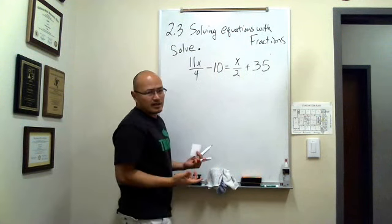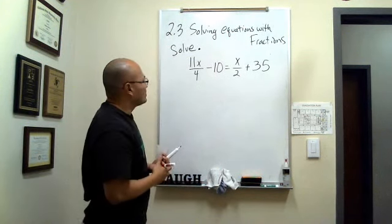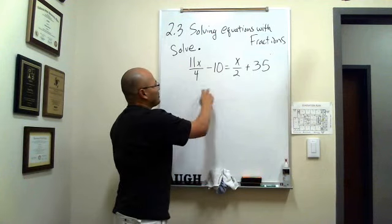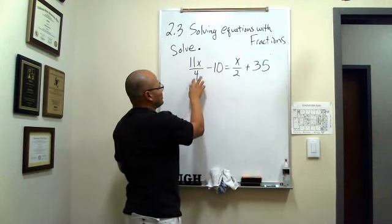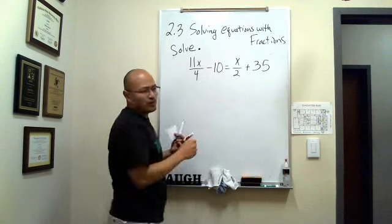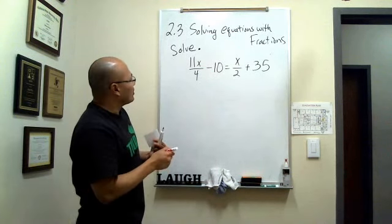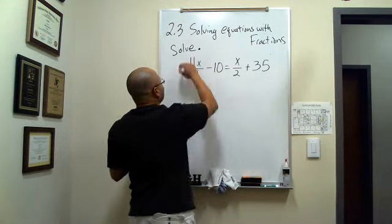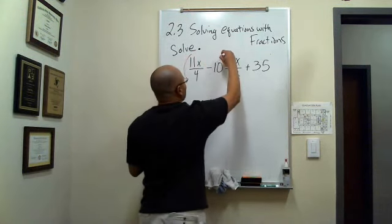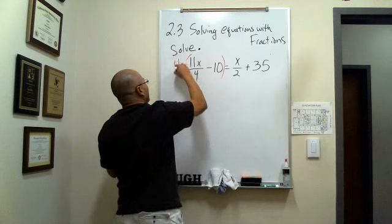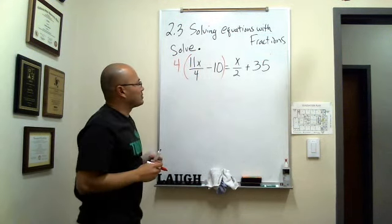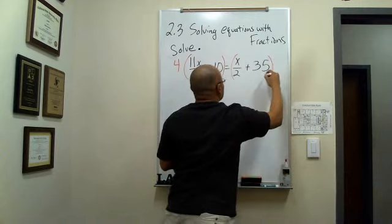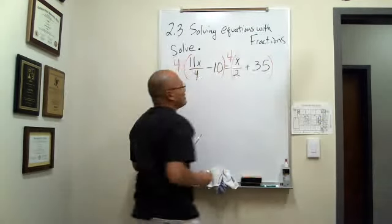In this case, the numbers are pretty small, so we can find it by simply using the number 4. The lowest common denominator between 4, 1, and 2 is actually just 4. We are going to balance this equation by multiplying the entire left side by 4, and on the entire right side, I'm going to use parentheses and multiply by 4.